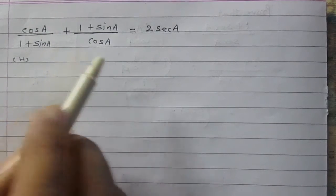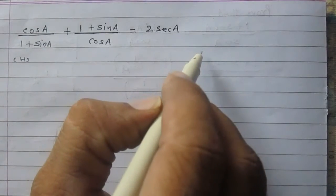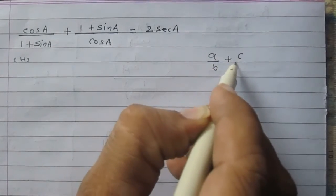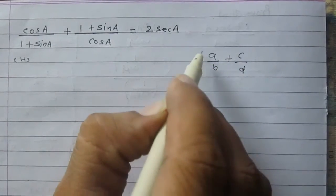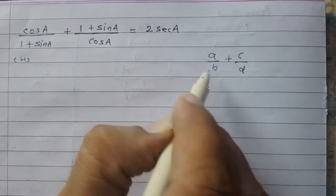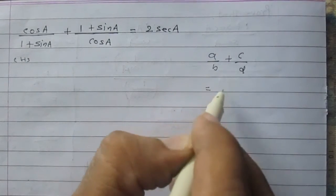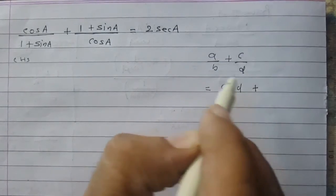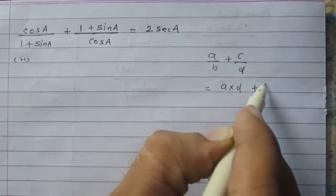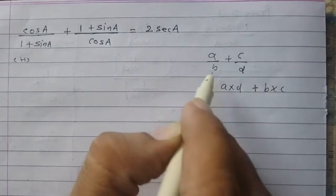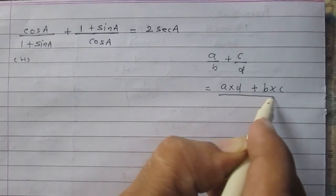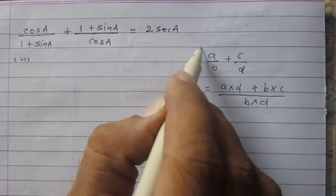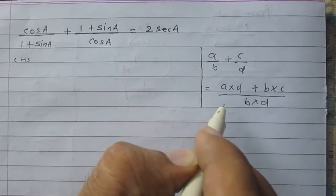It is an addition of two fractions. It is like A upon B plus C upon D. We can write it as A multiplied by D plus B multiplied by C, and then in the denominator it is B multiplied by D. Using this relation,